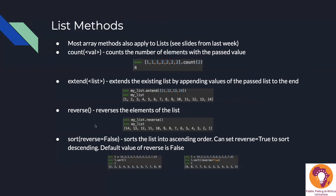The reverse method reverses the elements of the list. It doesn't accept any arguments because there's only one way to reverse a list — it takes the existing list and flips it. After calling reverse on my list, 14 is now at index zero. Note that reverse doesn't require the list to be sorted — it reverses whatever order the elements are currently in, sorted or not.